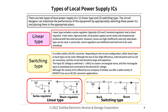The switching type is often called the DC-DC converter. Depending on the circuit configuration, either boost type or buck type can be used. Although losses are low and efficiency is high, external parts such as a coil are necessary and the circuit size becomes large and expensive. The input DC voltage is switched up to one megahertz to create a rectangular wave, which is then smoothed and converted to the desired DC voltage. While the variety of ICs offered is limited, a wide variety of MOSFETs for DC-DC converter applications is available.